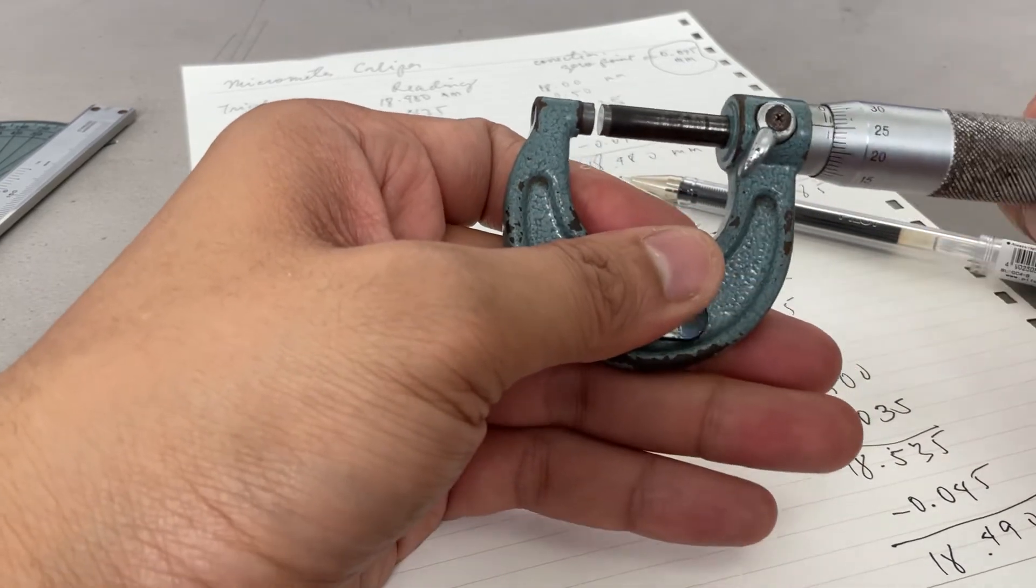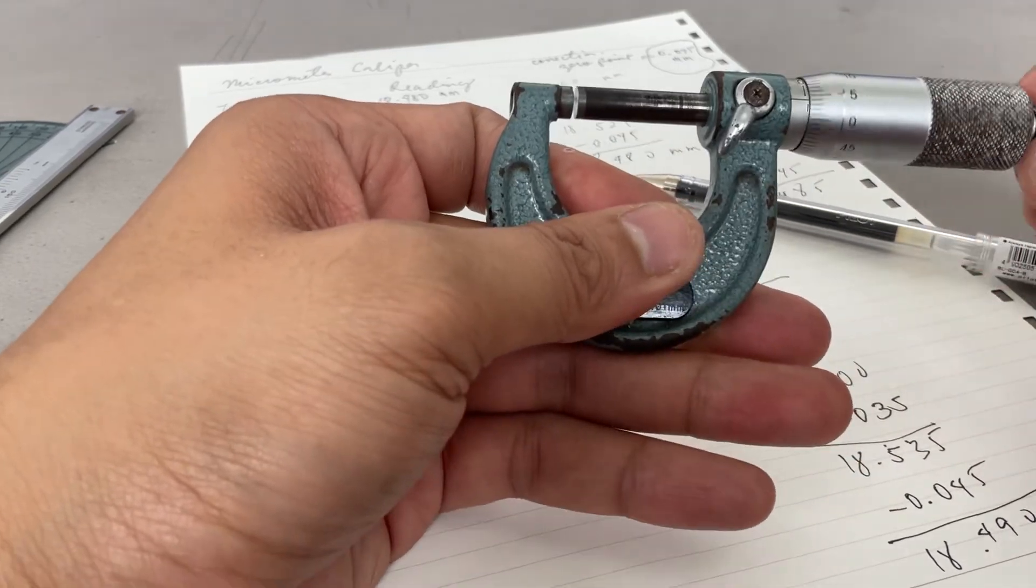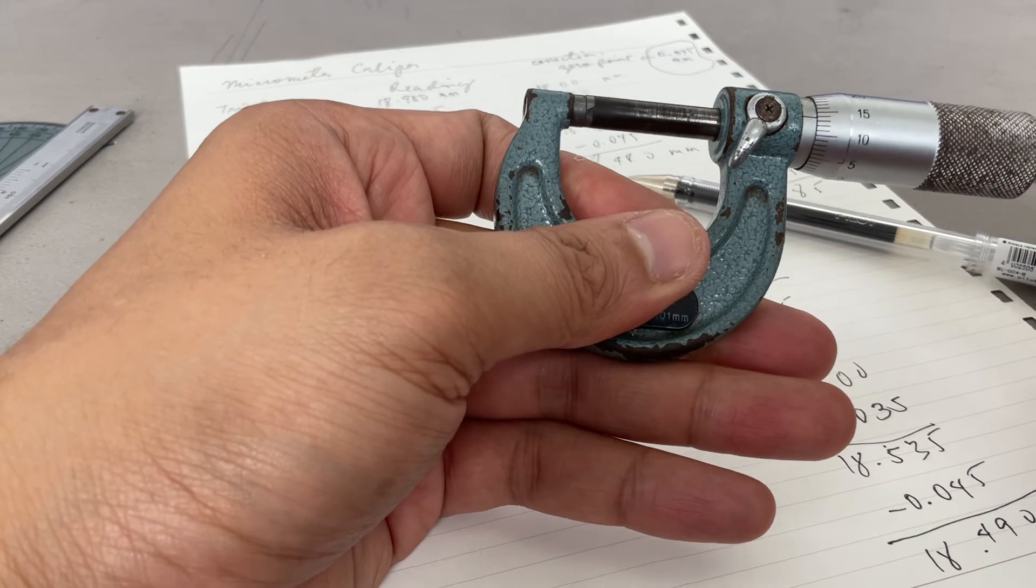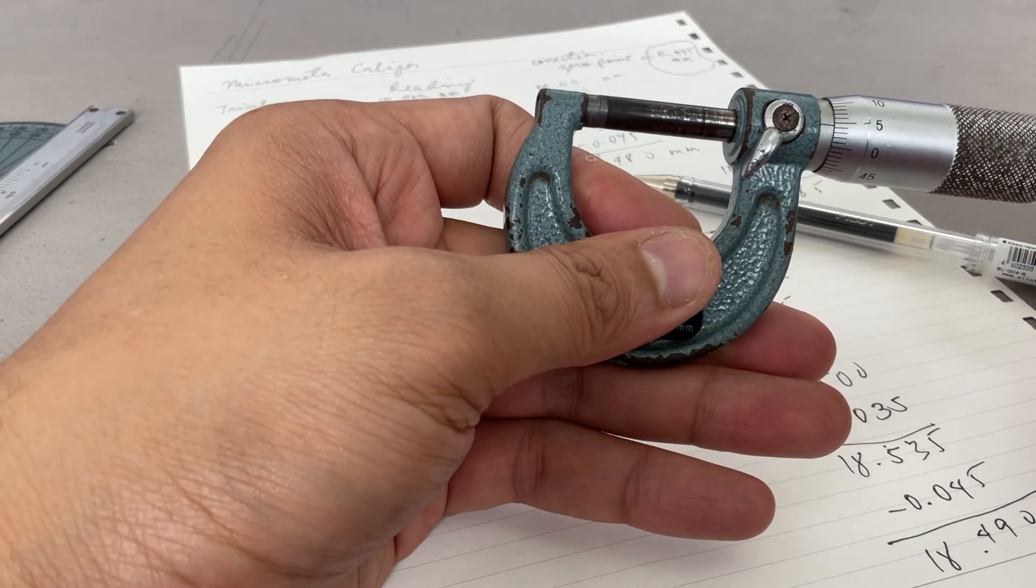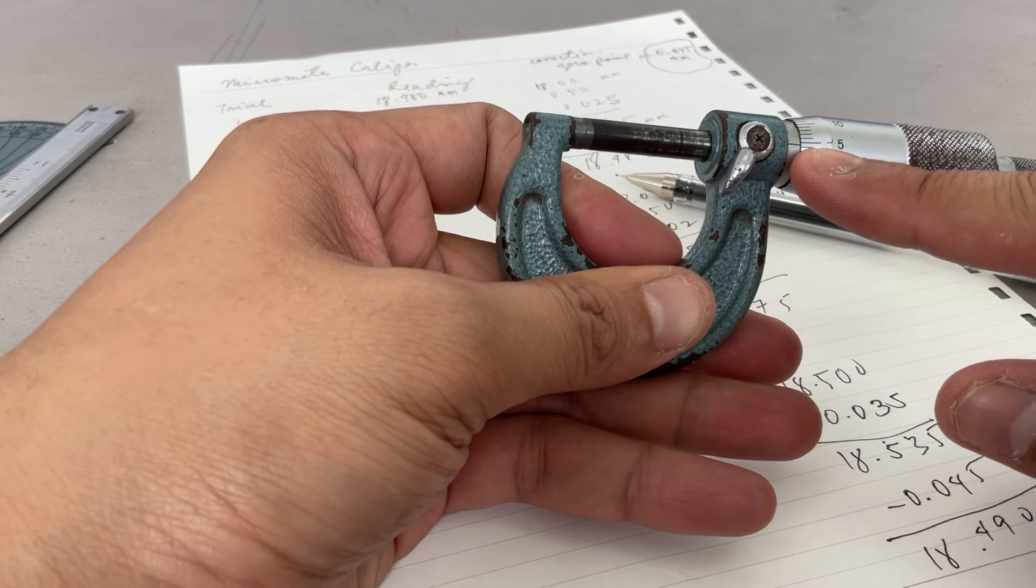If you are now close, do not use this thimble but use the ratchet that should click. Look, it's consistent - it returns to 0.045.